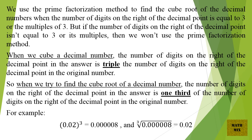When we cube a decimal number, the number of digits on the right of the decimal point in the answer is triple the number of digits on the right of the decimal point in the original number. So when we find the cube root of a decimal number, the number of digits on the right of the decimal point in the answer is one third of the number of digits in the original number. For example, 0.02 cubed equals 0.0000008, and the cube root of 0.0000008 equals 0.02.